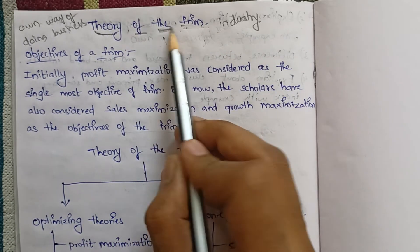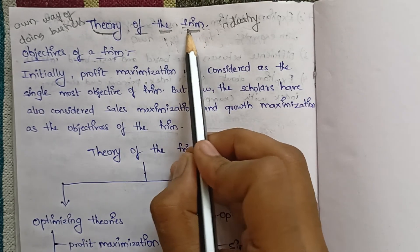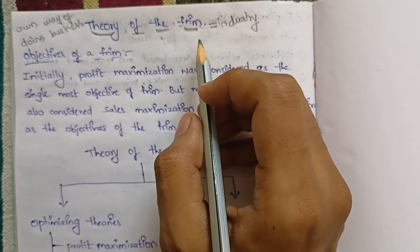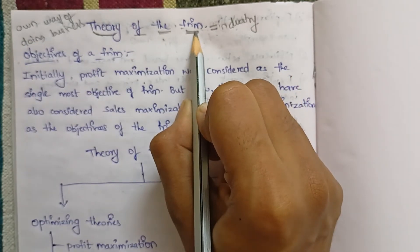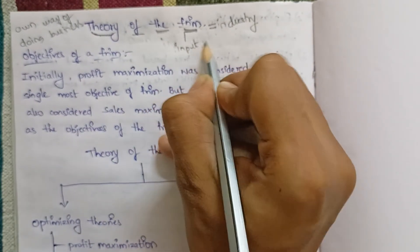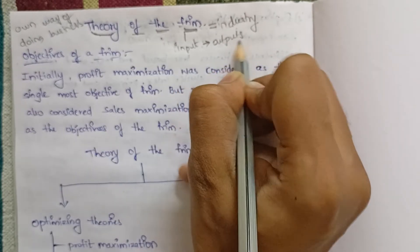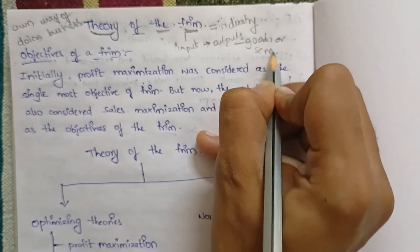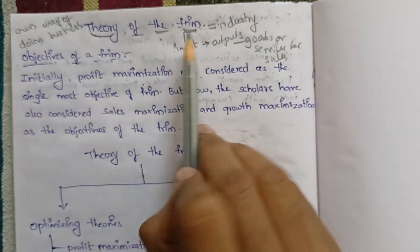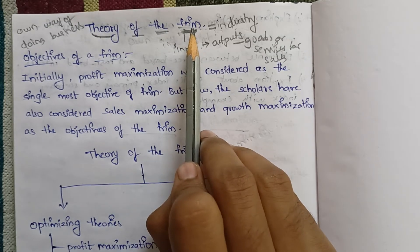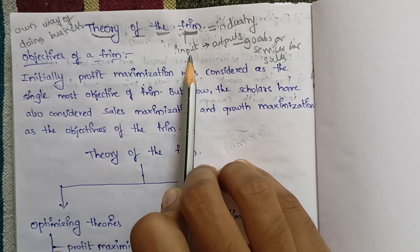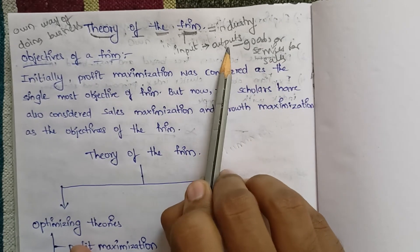Hello guys, welcome to our channel. Today I am going to teach you about the theory of the firm. A firm is an industry. The main aim of a firm is to purchase resources, which are inputs, transform them into goods or services, and sell them as outputs.